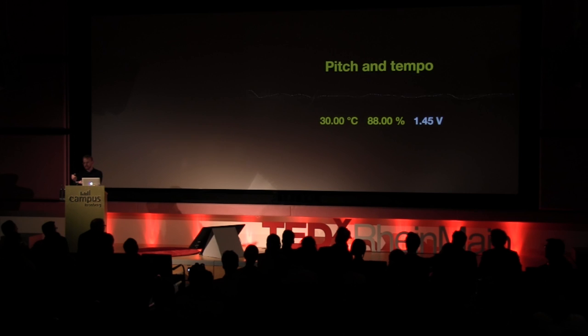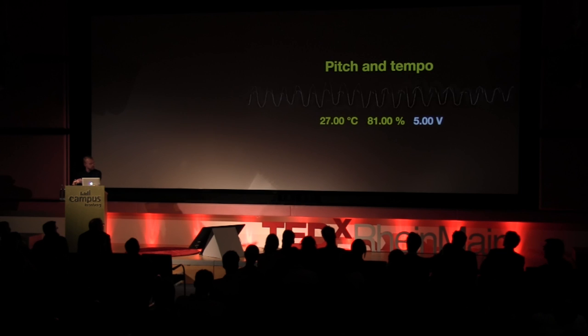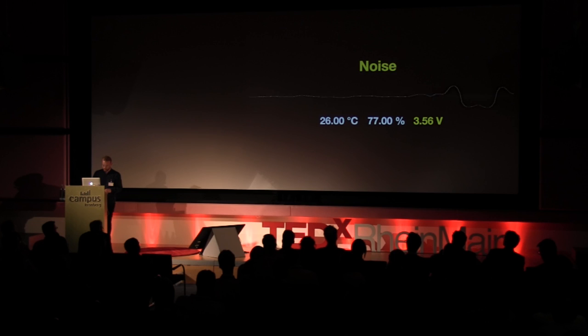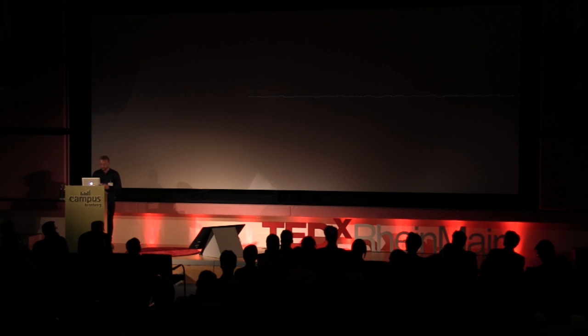The next sensor is a gas sensor, which measures a combination of gases in the air and raw voltage. If I expose this sensor to lighter gas, for example, you will see that the input will rise and this will generate noise and glitchy effects. You can hear that the tempo is moving down slowly afterward.